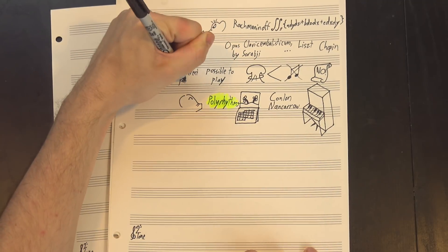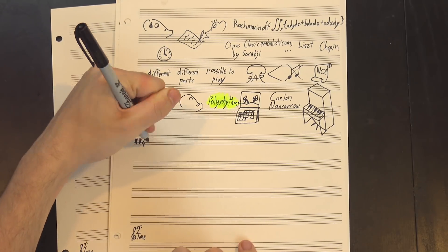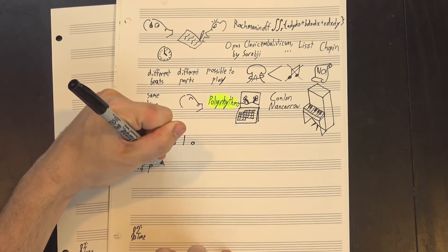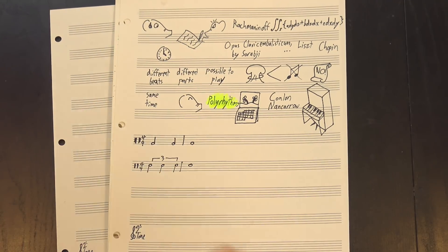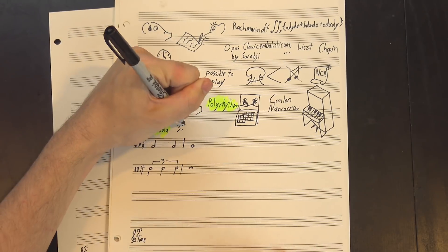Basically, you just have two different parts playing a different number of beats in the same amount of time. Like, if you have one part playing two beats per bar and another playing three per bar, you can put them together to make what's called a hemiola, or a three-against-two polyrhythm.